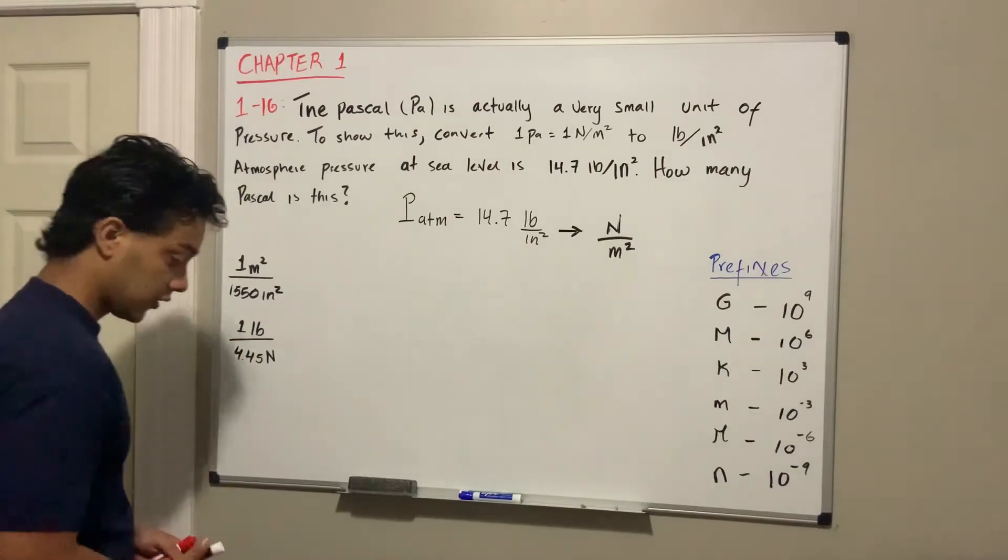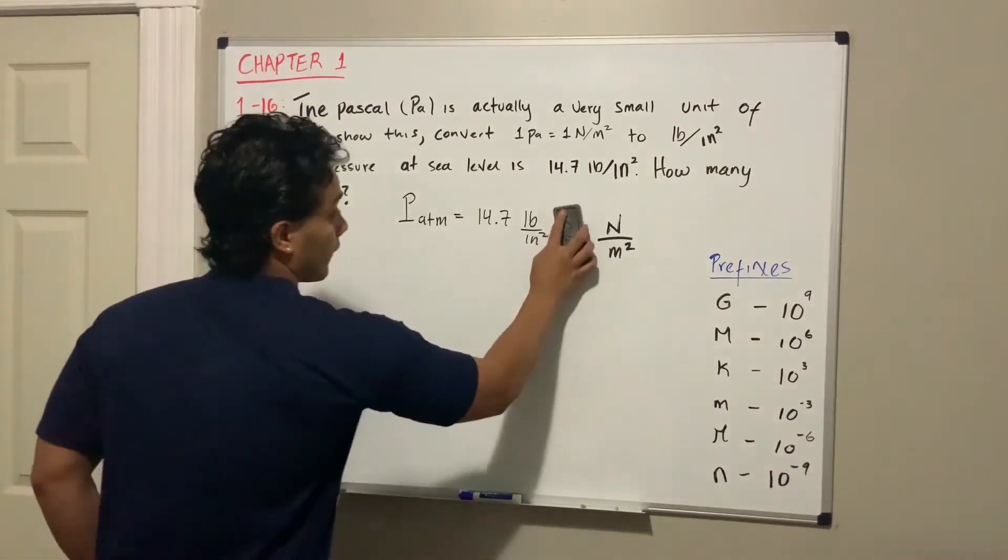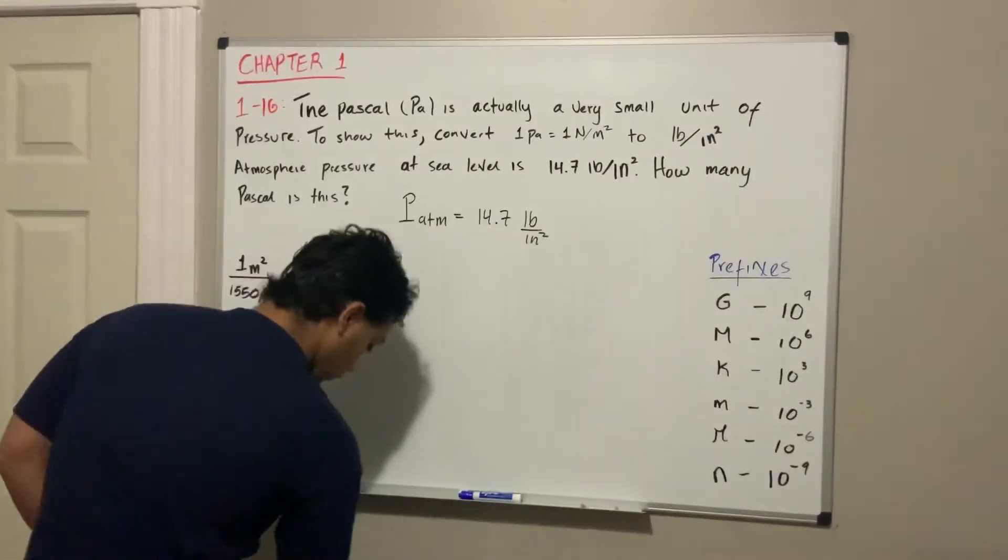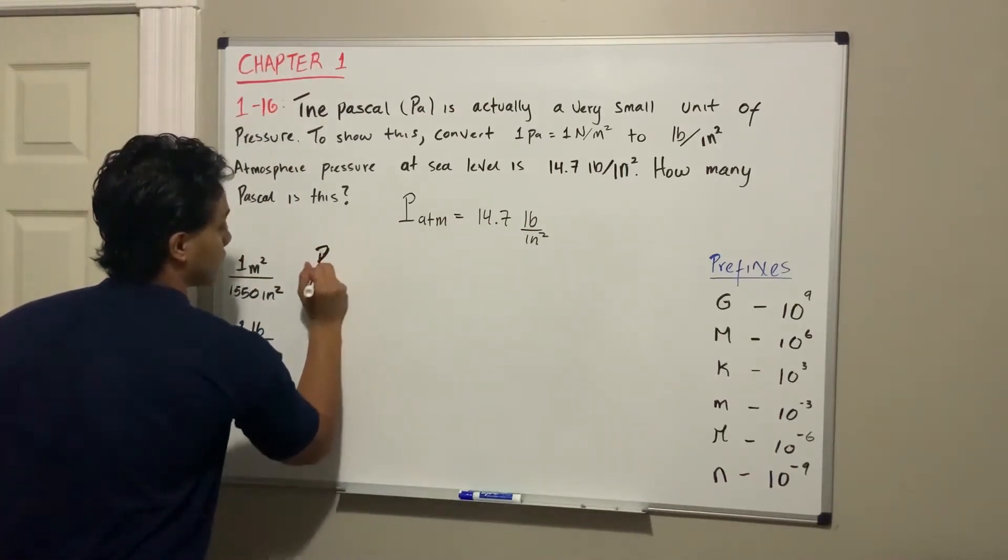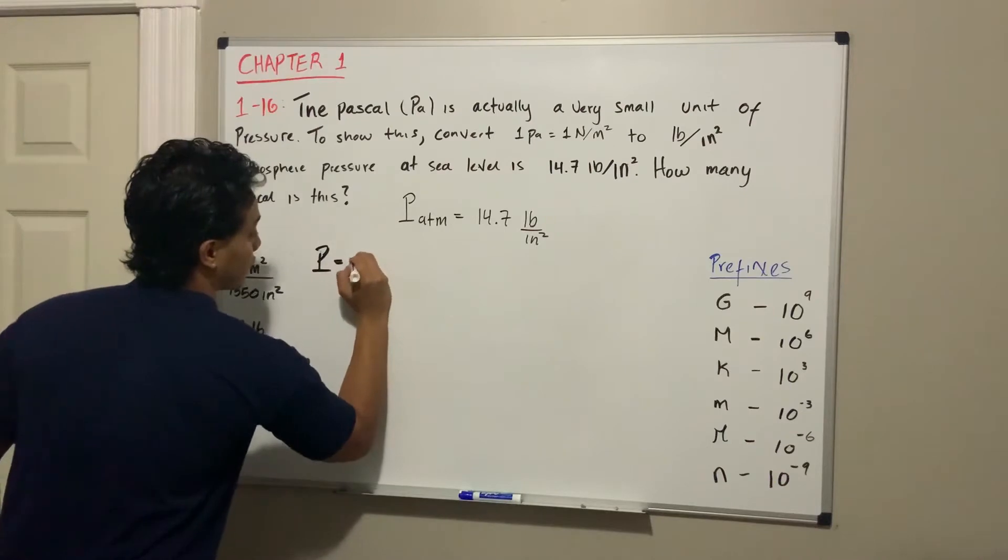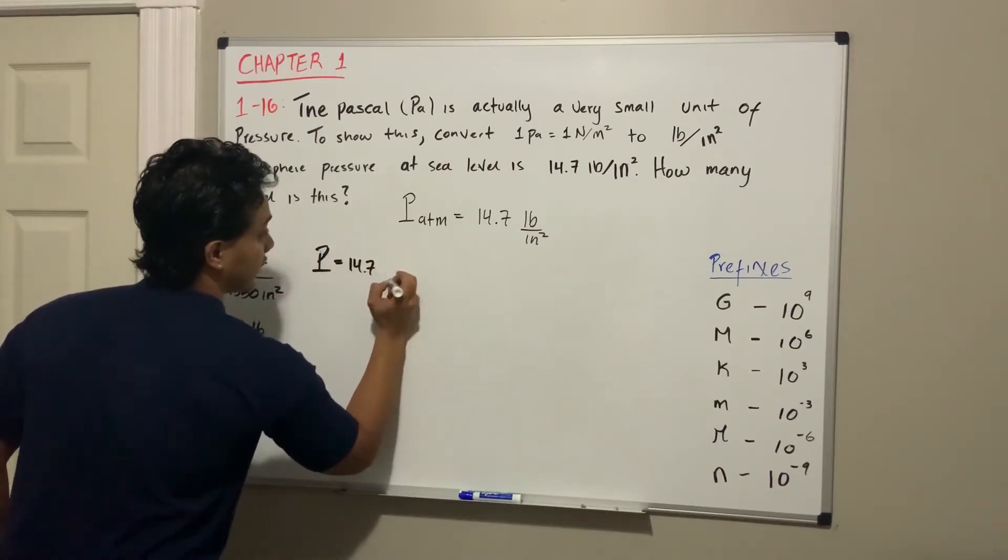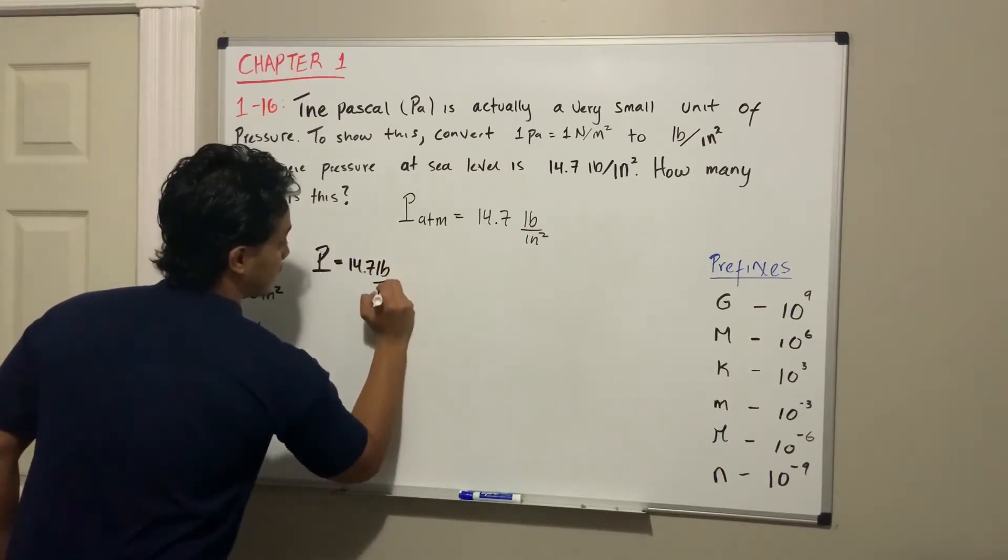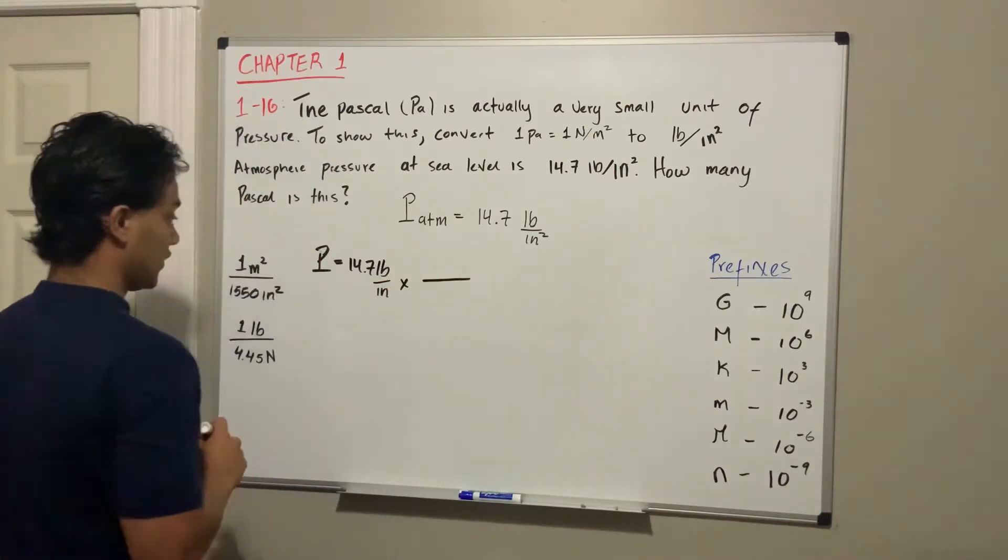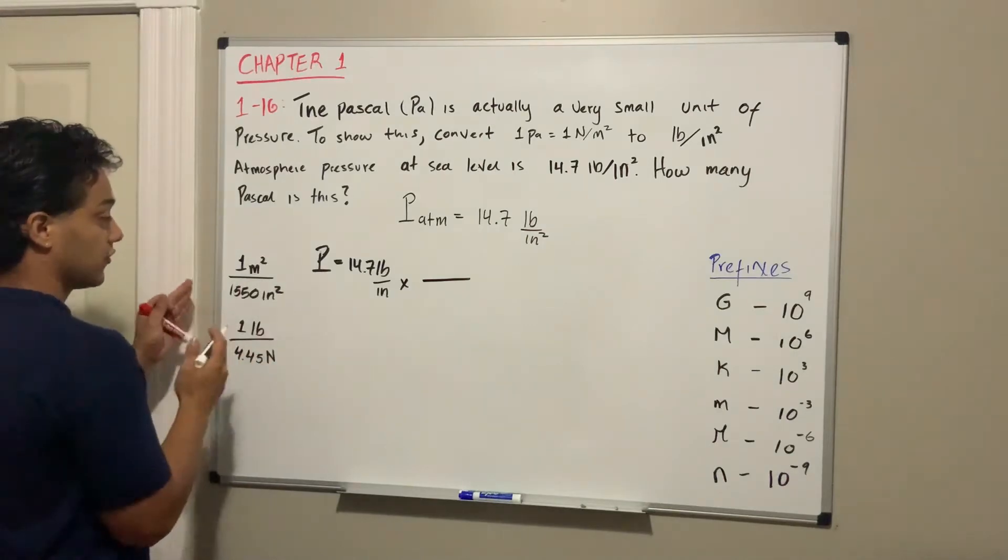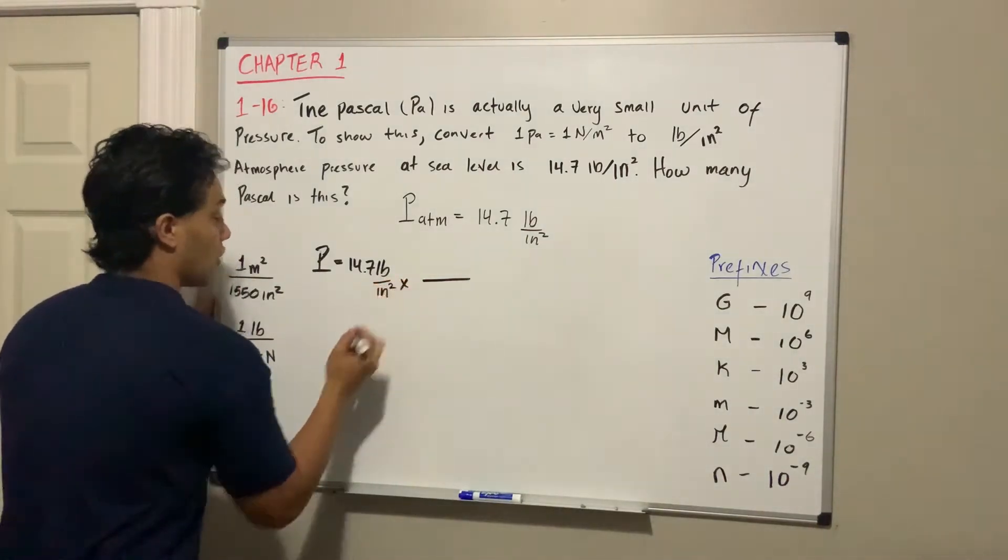So we're going to take our pressure, which equals 14.7 pounds per inch squared, and we're going to multiply by a conversion factor.